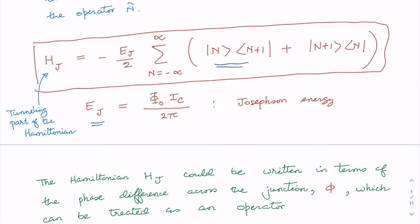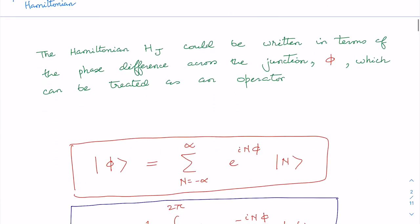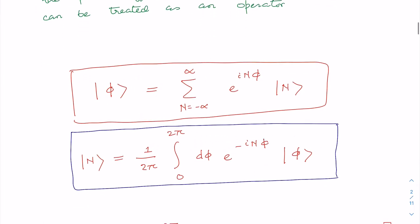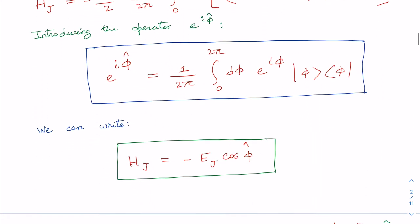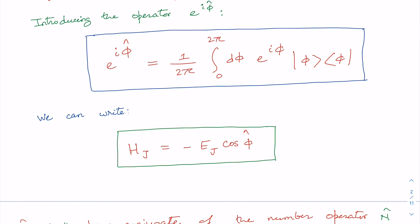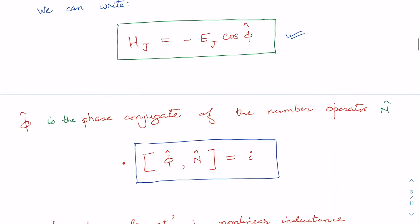This Hamiltonian is similar to the one discussed in the context of the Cooper pair box Hamiltonian in a previous class. It can be written in terms of the phase difference across the junction φ, which can be treated as an operator. We can define the basis state φ-cap expressed in terms of the number state basis, and using all these things, the operator e^(iφ-cap) can be defined such that the Hamiltonian takes the compact form HJ = −EJ cos(φ-cap), where φ-cap is the phase conjugate of the number operator, satisfying a commutation relation.